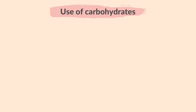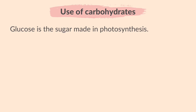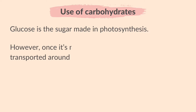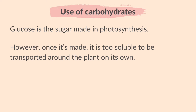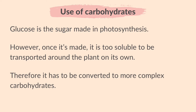Let's now take a look at how the carbohydrates made in photosynthesis are used and stored. Glucose is the sugar made in photosynthesis. However, once it's made, it is too soluble to be transported around the plant on its own. Therefore, it has to be converted to more complex carbohydrates.